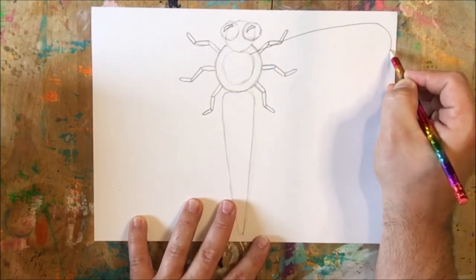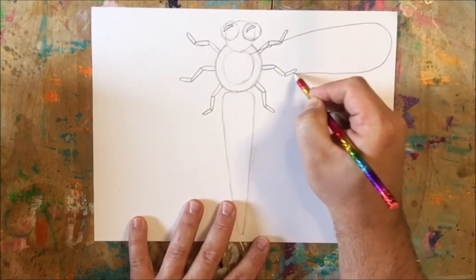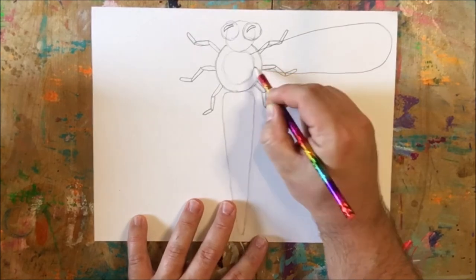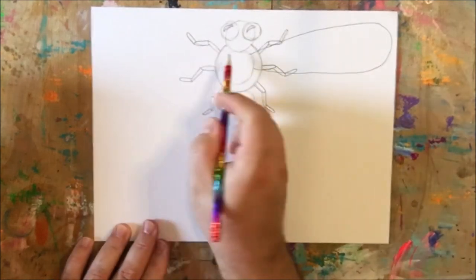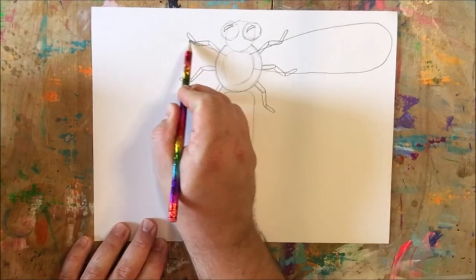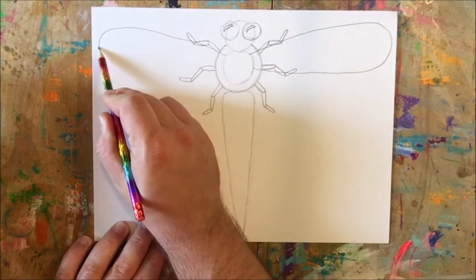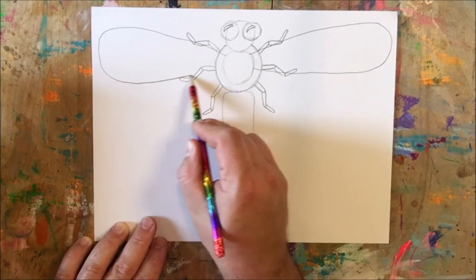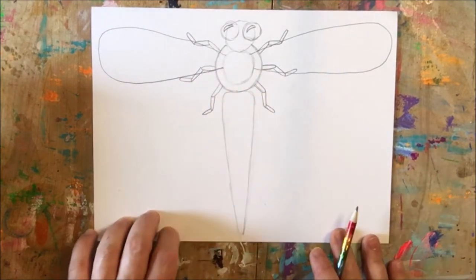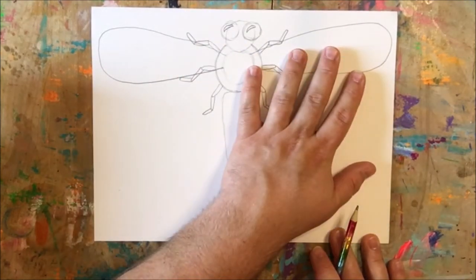And when I almost get to the edge of the page, I'm going to loop back around and come back to that circle that I drew. I'm going to repeat that on the opposite side. There we go. Now I have a loop over here and a loop over here.